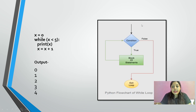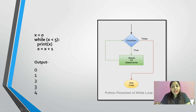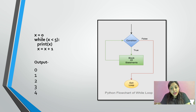Let us see the flowchart of the while loop. The control enters the condition box. When the condition is true, the block of statements is executed. The result is fed back into the condition box and evaluated again. If it is true, control returns to the block of statements; if false, it exits the loop.